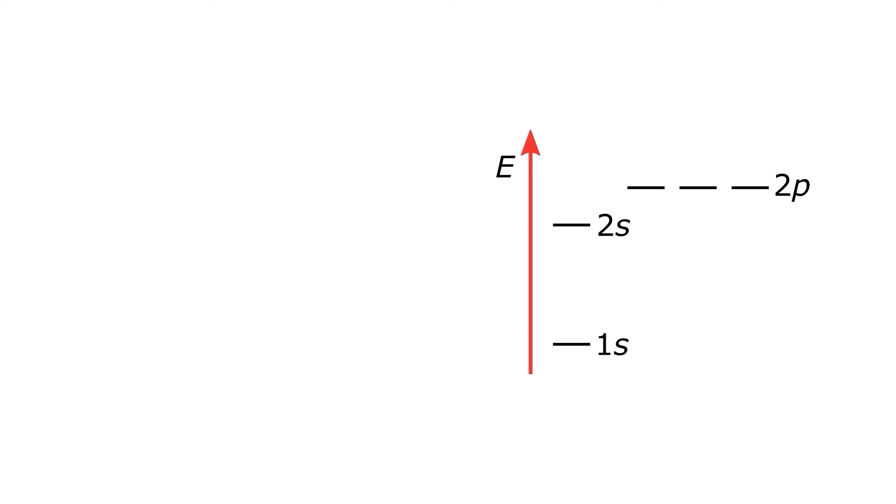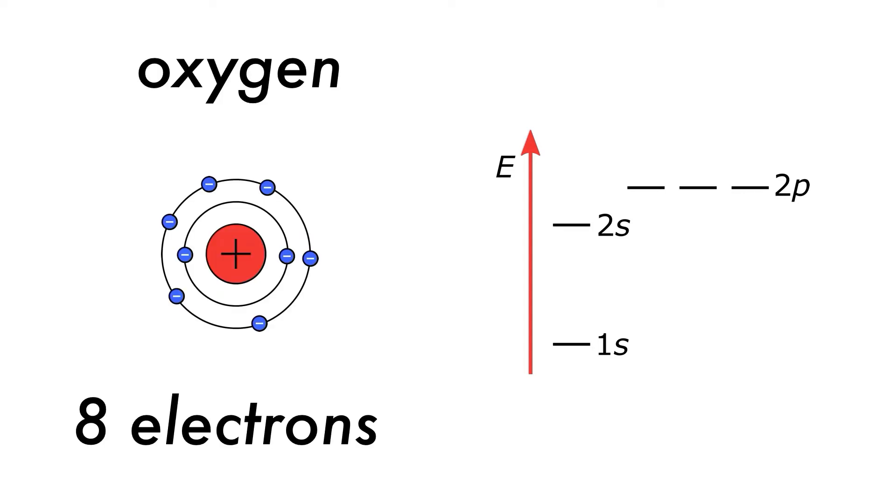The Aufbau Principle can be used to determine the electron configuration of a particular atom. For example, a neutral oxygen atom has 8 electrons. Let's start adding the electrons to the orbitals, each of which can hold at most 2 electrons.